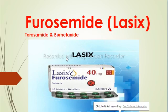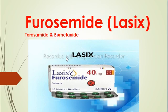Welcome back with another video lecture from Pharmacology — Furosemide, or LASIX. Furosemide, Torsemide, and Bumetanide are three medications that fall into the same class. Furosemide are loop diuretics — 'loop' for loop of Henle, and 'diuretics' for diuresis, meaning it produces water or increases urine flow.